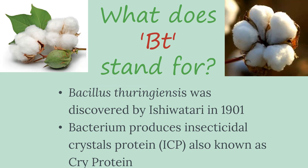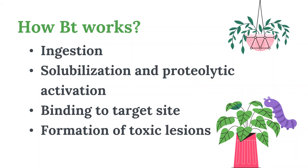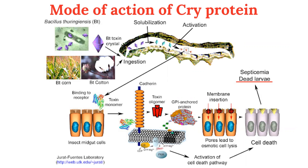How does BT work? What is the mode of action of Cry protein produced by it? First, BT is ingested; then solubilization and proteolytic activation take place; then binding to the target site; and then it forms toxic lesions in the pest. The BT toxin gene has been cloned and incorporated into the crop plant to make it insect-resistant, functioning as a biopesticide. BT crops produce proteins to kill insects like lepidopterans, coleopterans, or dipterans.